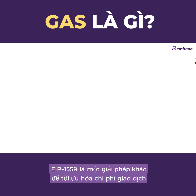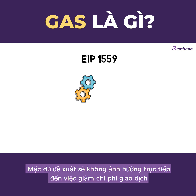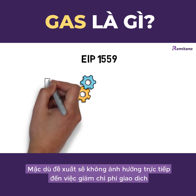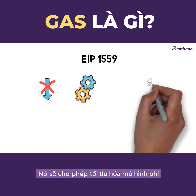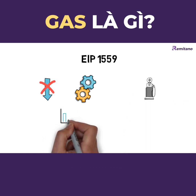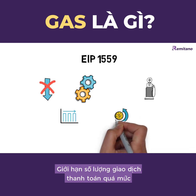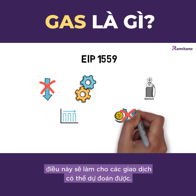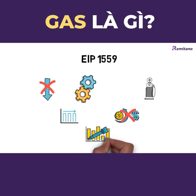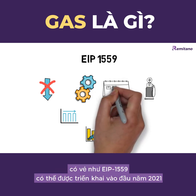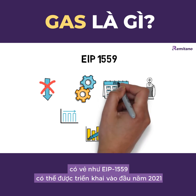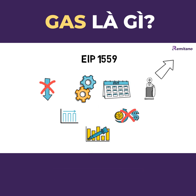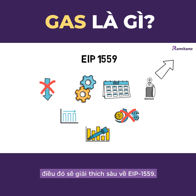EIP-1559 is another solution for optimizing transaction costs. Although the proposal will not directly lower transaction costs, it will optimize the fee model by smoothing fee spikes and limiting overpaid transactions, making fees more predictable. From the timeline perspective, EIP-1559 could be implemented in early 2021.